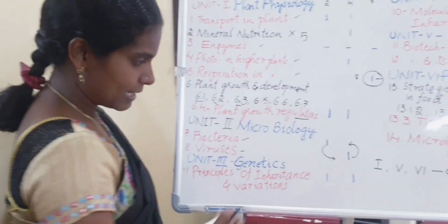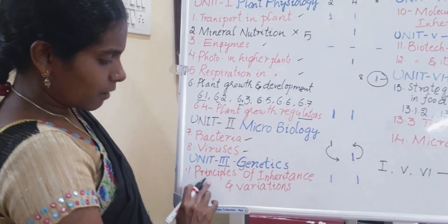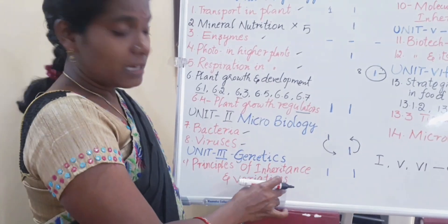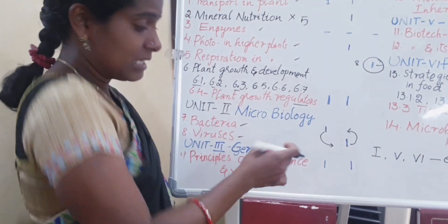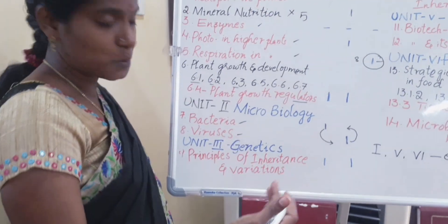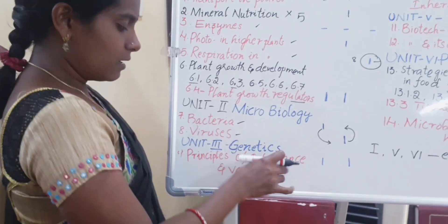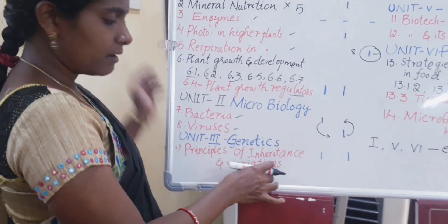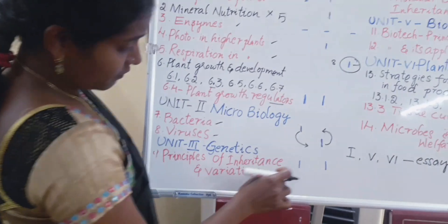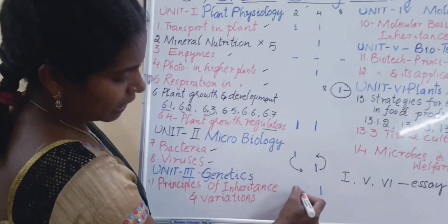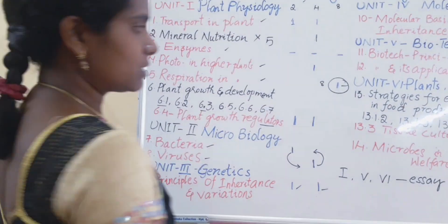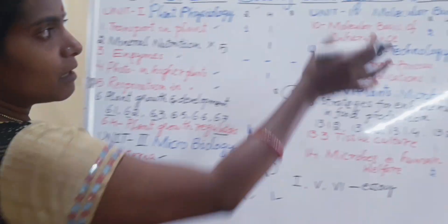Coming to the third unit, Genetics — Principles of Inheritance and Variation. Here you will be learning about genes, their transfer, and related concepts. From this chapter, one two-mark question and one four-mark question will be coming.